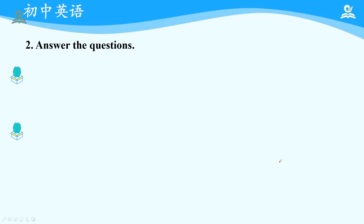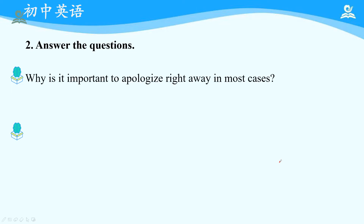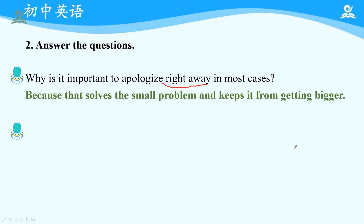好，我们来看第二组题目：Answer the short questions. 这是中考任务型阅读的考察形式，需要大家关注文本细节信息，根据题目里的关键词锁定信息句，找到正确位置，然后用合乎语法规则的形式作答。第一个问题：Why is it important to apologize right away in most cases? 根据right away，能够快速锁定到第一段最后一句信息句：That solves the small problem and keeps it from getting bigger. keep from等于prevent from，核心是阻止矛盾升级，大事化小、小事化了。